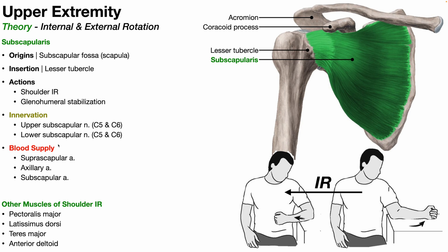The blood supply is via the suprascapular artery, the axillary artery, and the subscapular artery. Regarding the motion itself: starting with the arm out and rotating it inward at the shoulder is true internal rotation. Putting the arm behind the back to reach the lumbar spine is sometimes called functional internal rotation, but that is not true internal rotation. The motion going from a neutral position inward — that is true shoulder internal rotation.